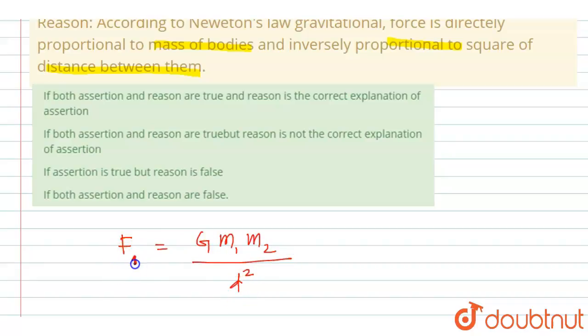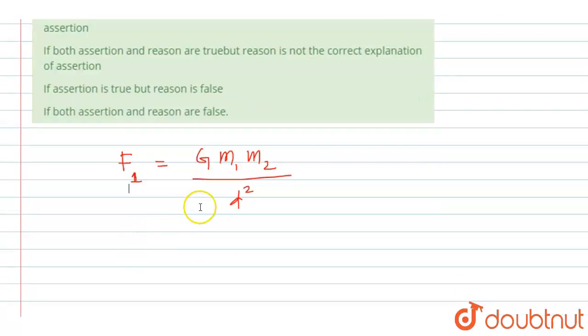Now, if we double the mass of both the particles, if we double the mass, then we will get new force which will be equal to, let us call it F2. F2, this will be G 2M1 multiplied by 2M2 divided by 2D whole square.